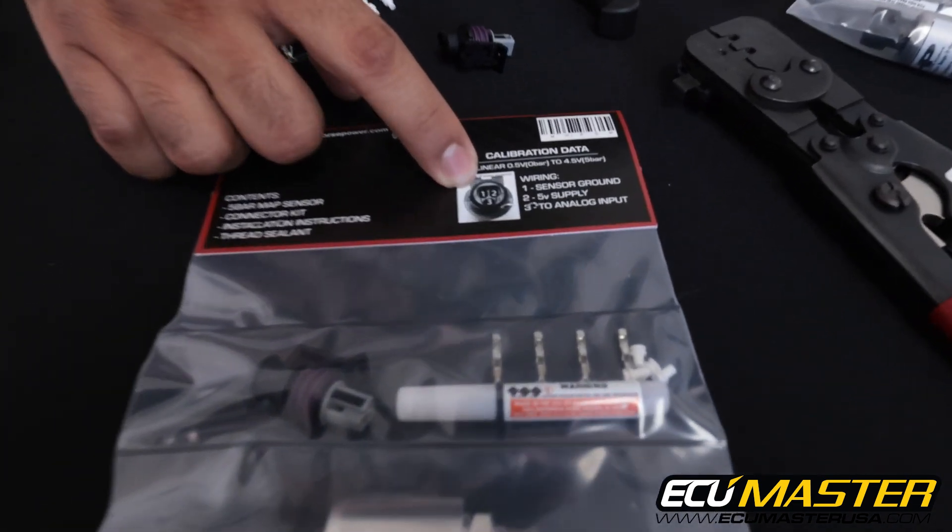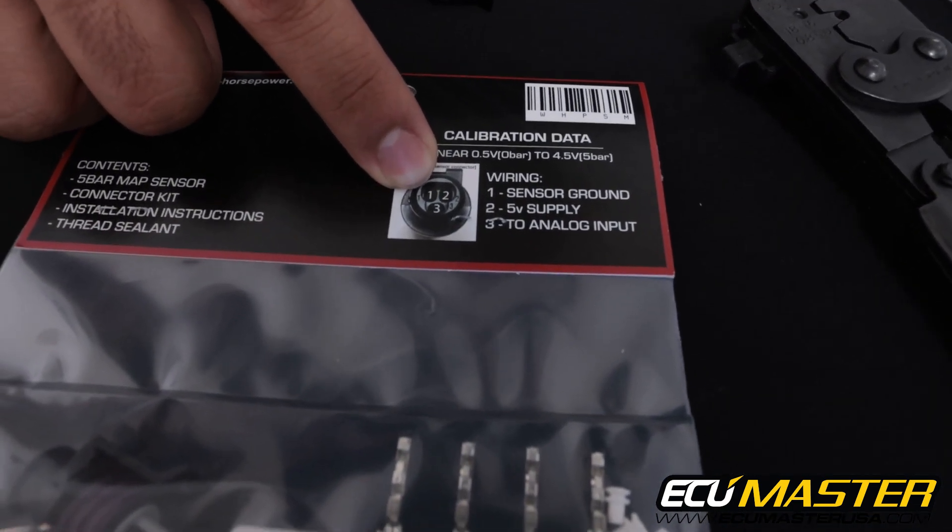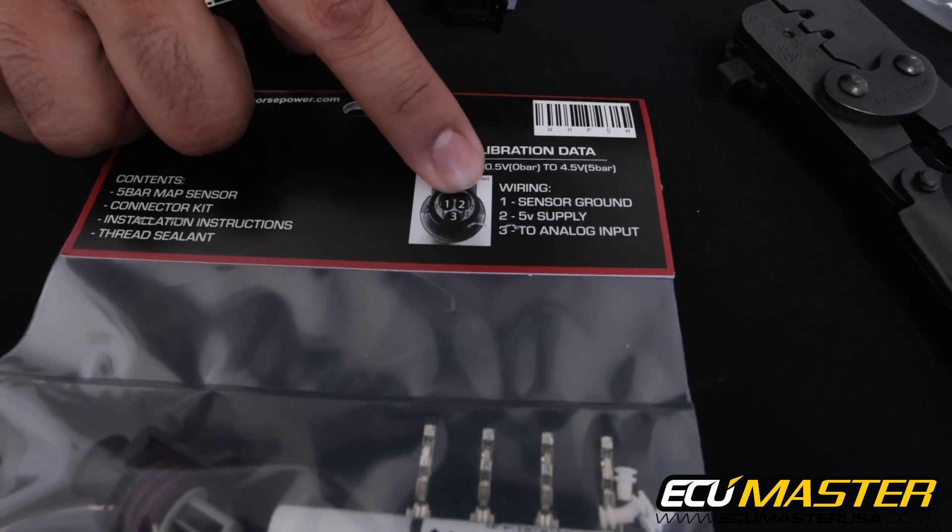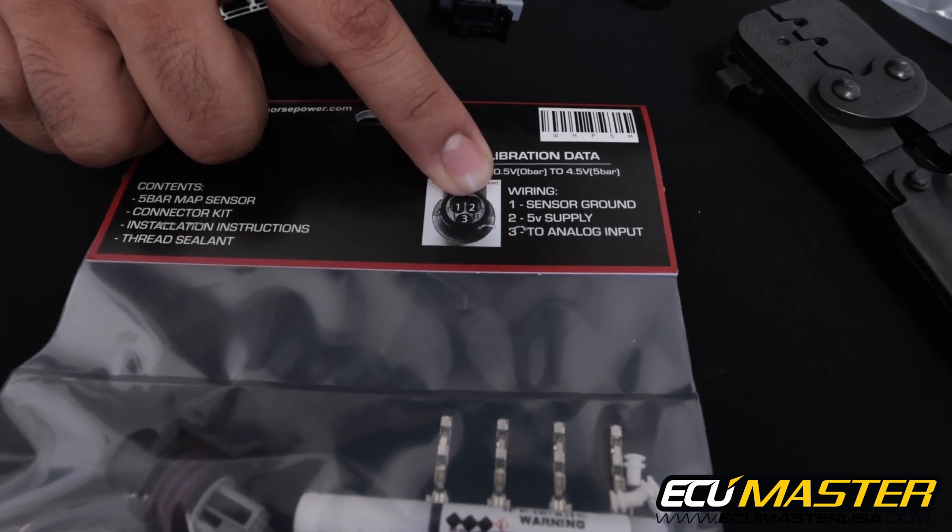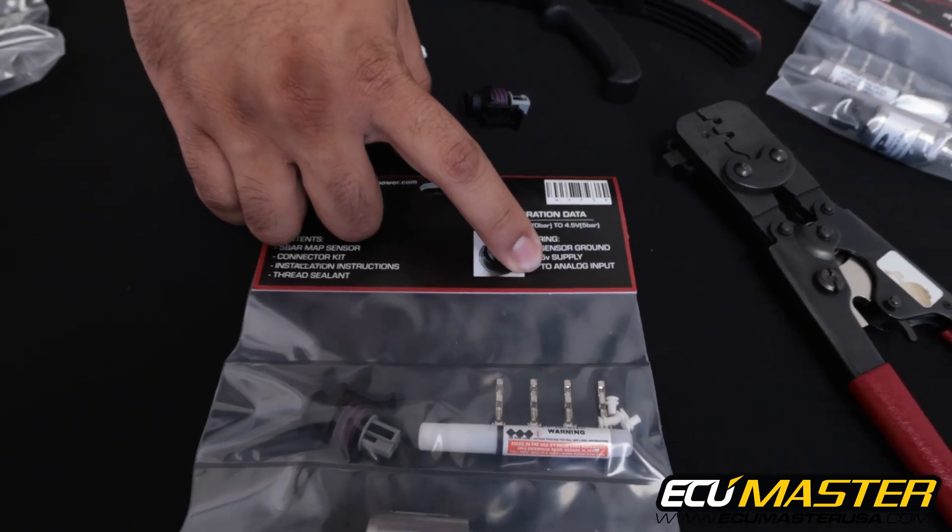The first thing you'll notice on the back of this package is that the pin out for the sensors is actually the same. Pin 1 being your sensor ground, pin 2 the 5 volt supply to the sensor, and pin 3 is the sensor signal that goes to the analog input of your EMU.